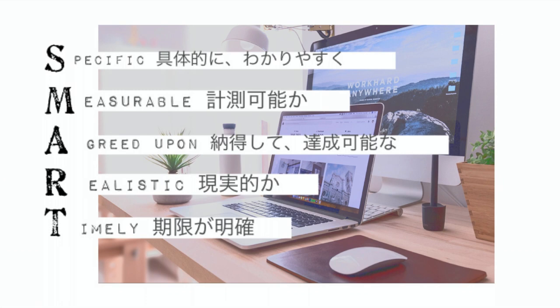会社勤めの方は、このSMARTの法則を聞いたことがあるかと思います。Sは Specific、具体的に分かりやすく。単に営業成績を上げたいとかではなく、毎月新しい顧客を2人増やすとか、具体的に細かく目標を立てます。